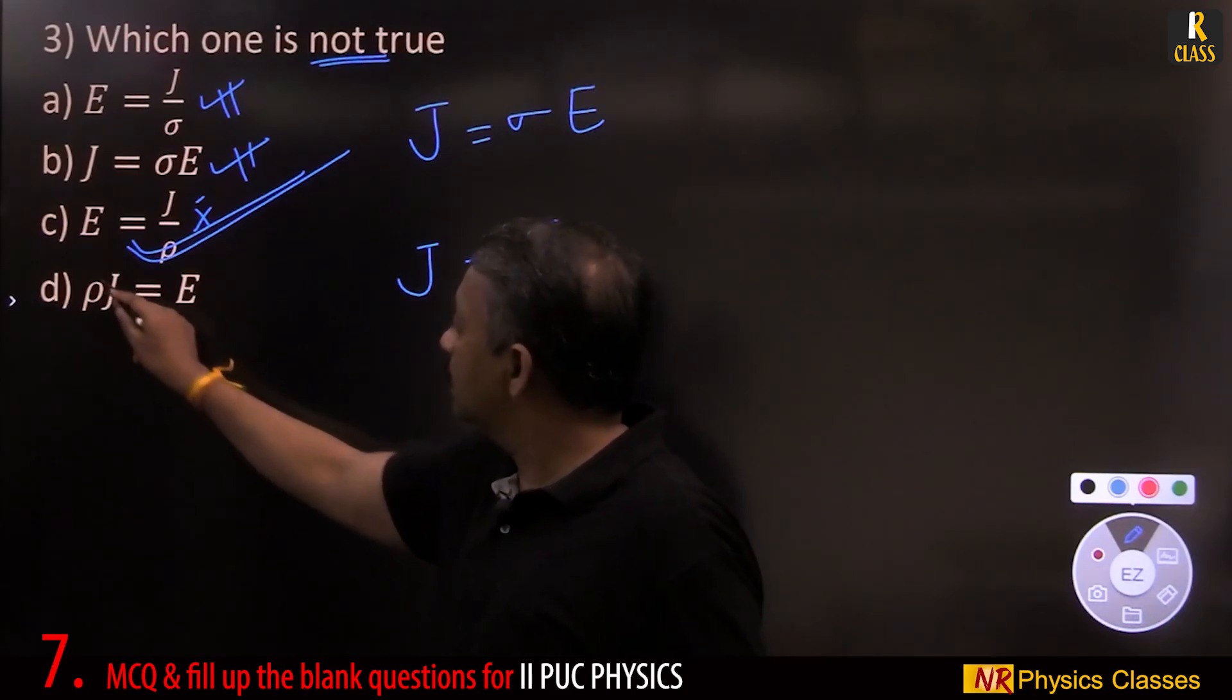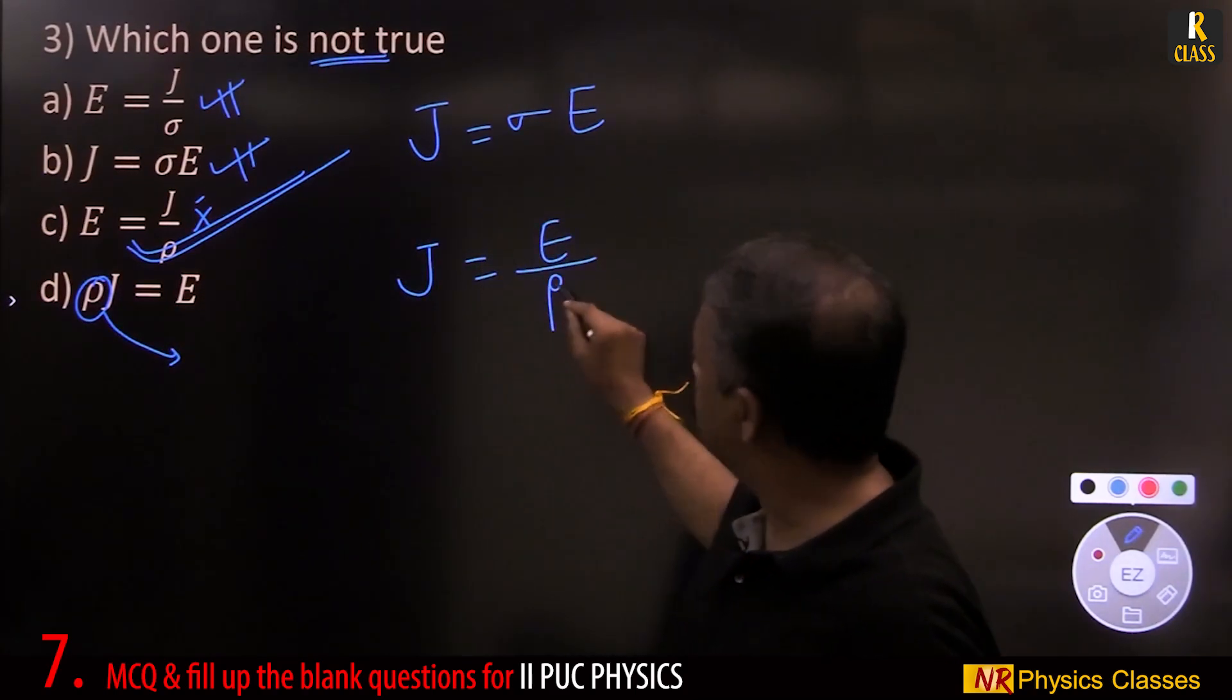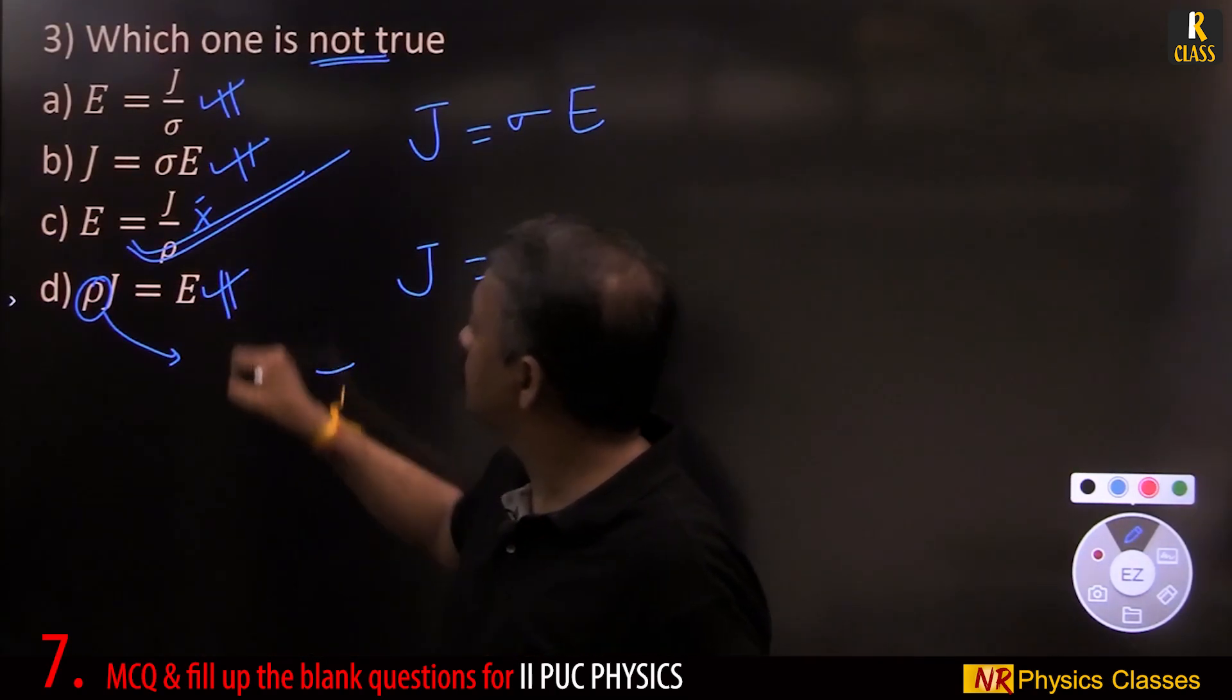J equal to E by rho. Bring this to the other side, rearrange, you will get this. Therefore, C.